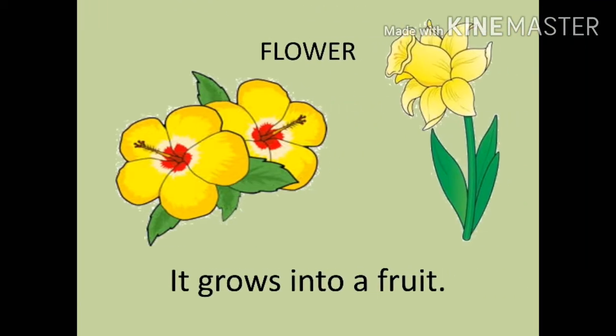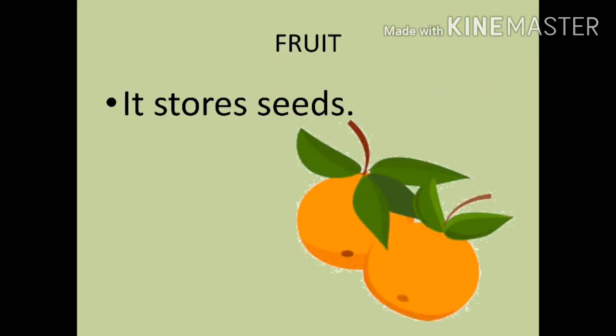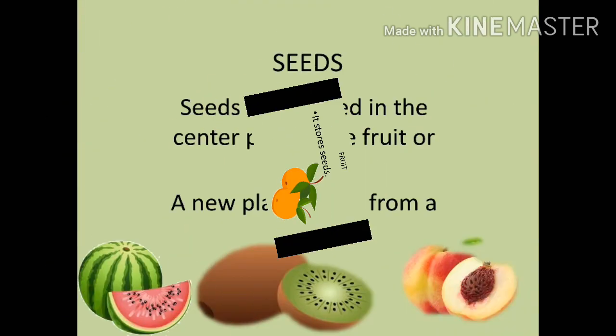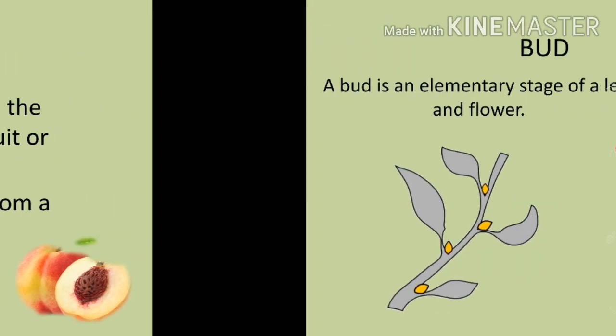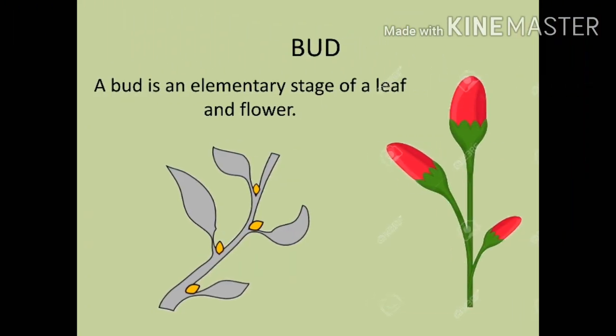A flower grows into a fruit. A fruit stores seeds inside it. Seeds are formed in the center part of the fruit or flower. A new plant grows from a seed. A bud is an elementary stage of a leaf and flower.